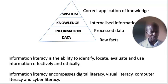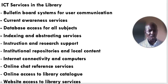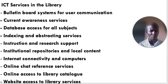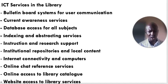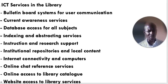For the library, which is an information source within an academic setting, the library can make available services to users — ICT services. Some of them include: current awareness services, institutional repository and local content services, internet connectivity and computers, and website access to library services. Please watch out for more videos on this channel.